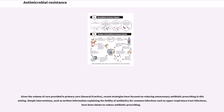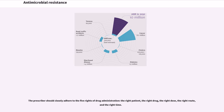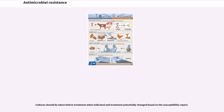Given the volume of care provided in primary care and general practice, recent strategies have focused on reducing unnecessary antibiotic prescribing in this setting. Simple interventions, such as written information explaining the futility of antibiotics for common infections such as upper respiratory tract infections, have been shown to reduce antibiotic prescribing. The prescriber should closely adhere to the five rights of drug administration: the right patient, the right drug, the right dose, the right route, and the right time. Cultures should be taken before treatment when indicated and treatment potentially changed based on the susceptibility report.